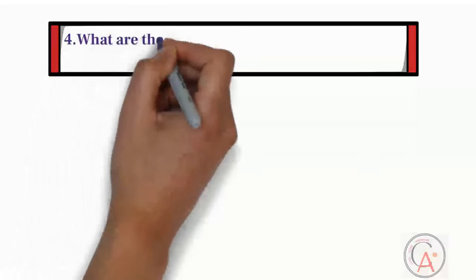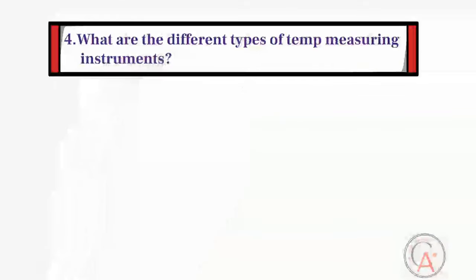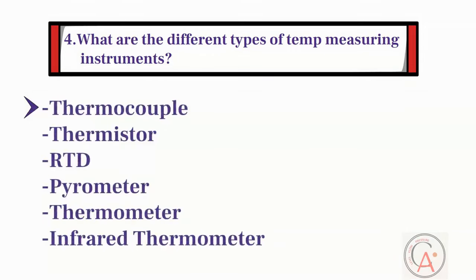The fourth question is: what are the different types of temperature measuring instruments? There are mainly five different types of temperature measuring instruments. The first type is a thermometer, the second is a thermistor, the third is RTD, the fourth is a pyrometer, the fifth is a thermocouple, and the sixth type is an infrared thermometer.